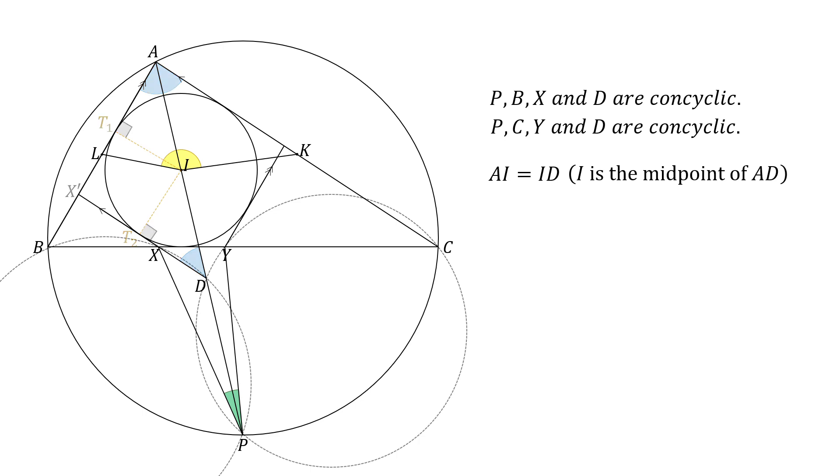Now, draw a line BD. In triangle ABD, it is given that L is the midpoint of AB, and we proved that I is the midpoint of AD. Thus, BD and LI are parallel. Angle ADB is equal to angle AIL because they are corresponding angles.